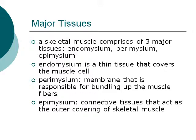A single skeletal muscle usually comprises three major tissues: the endomysium, perimysium, and the epimysium. Endomysium is a thin tissue that covers the muscle cell. Perimysium is the membrane responsible for bundling up the muscle fibers. Epimysium is the connective tissue that acts as the outer covering of the skeletal muscle.